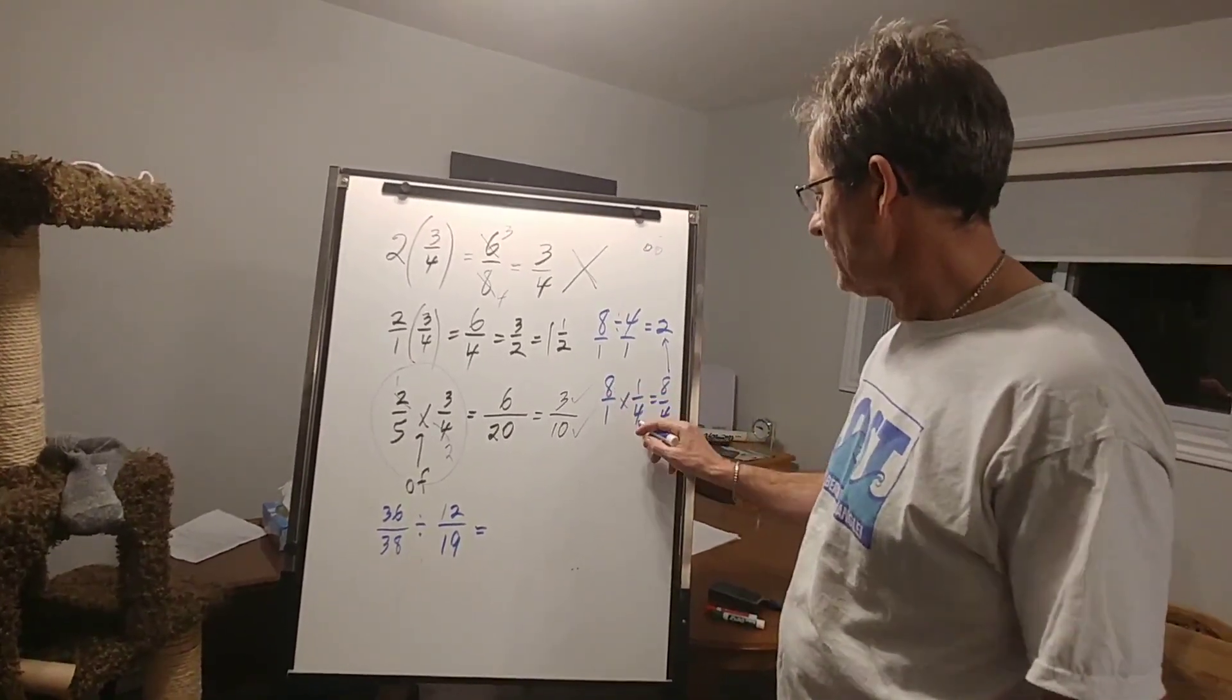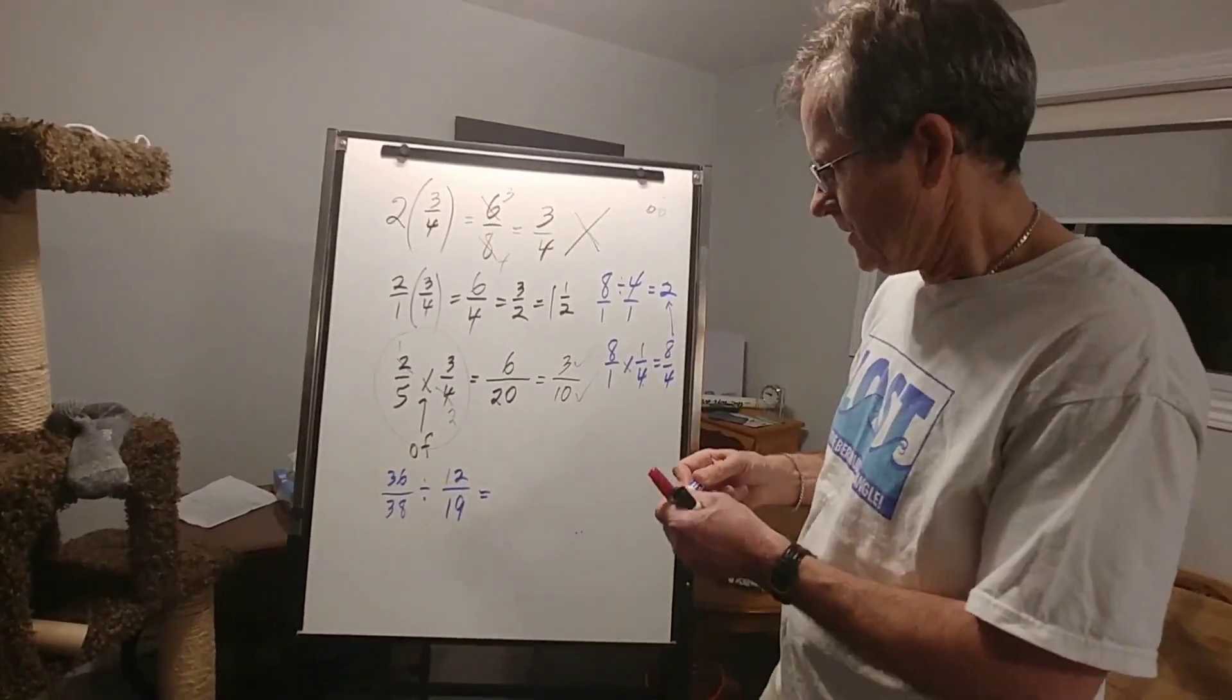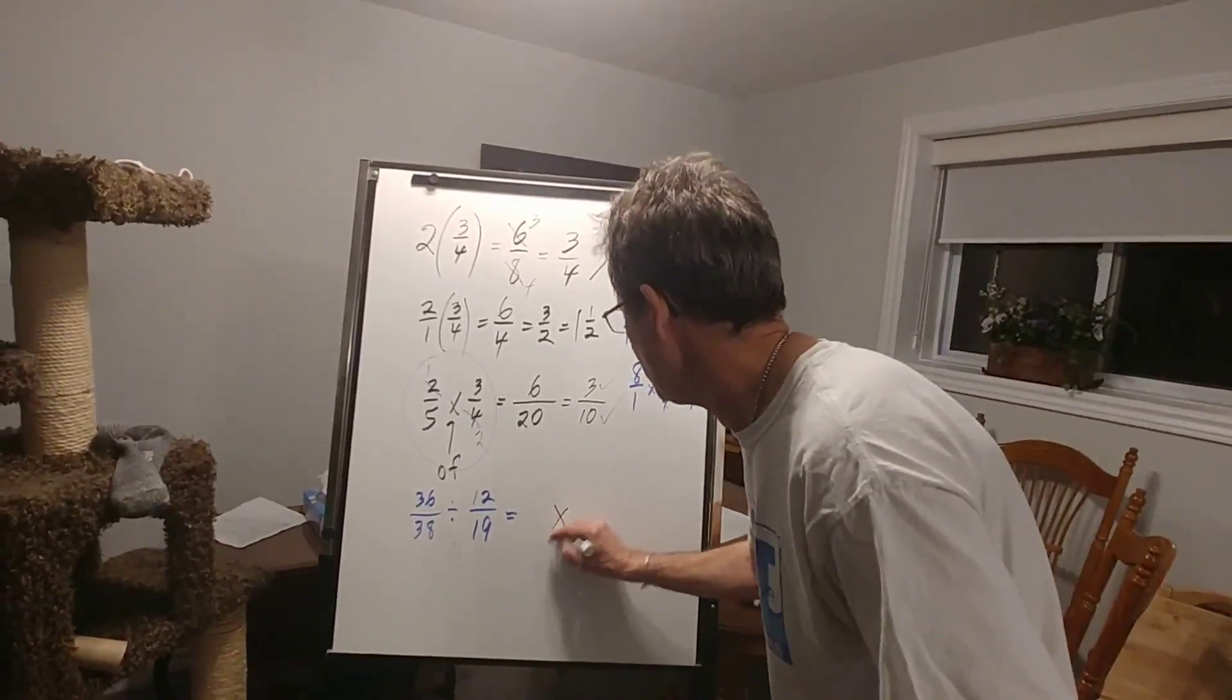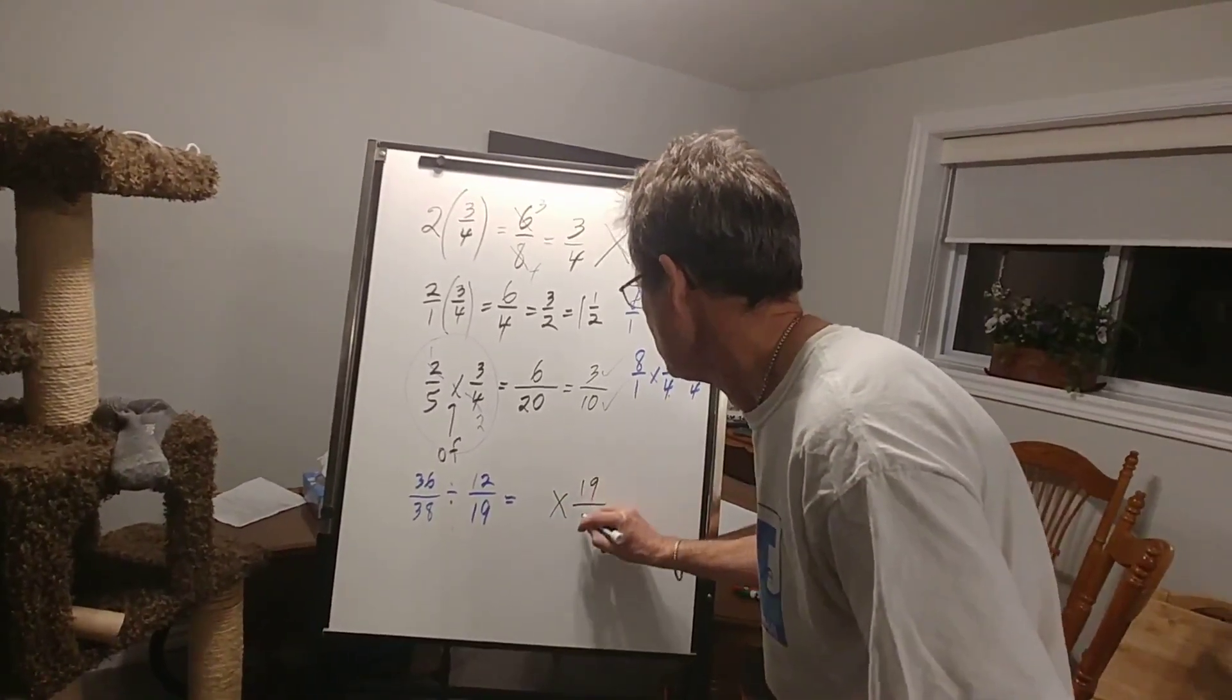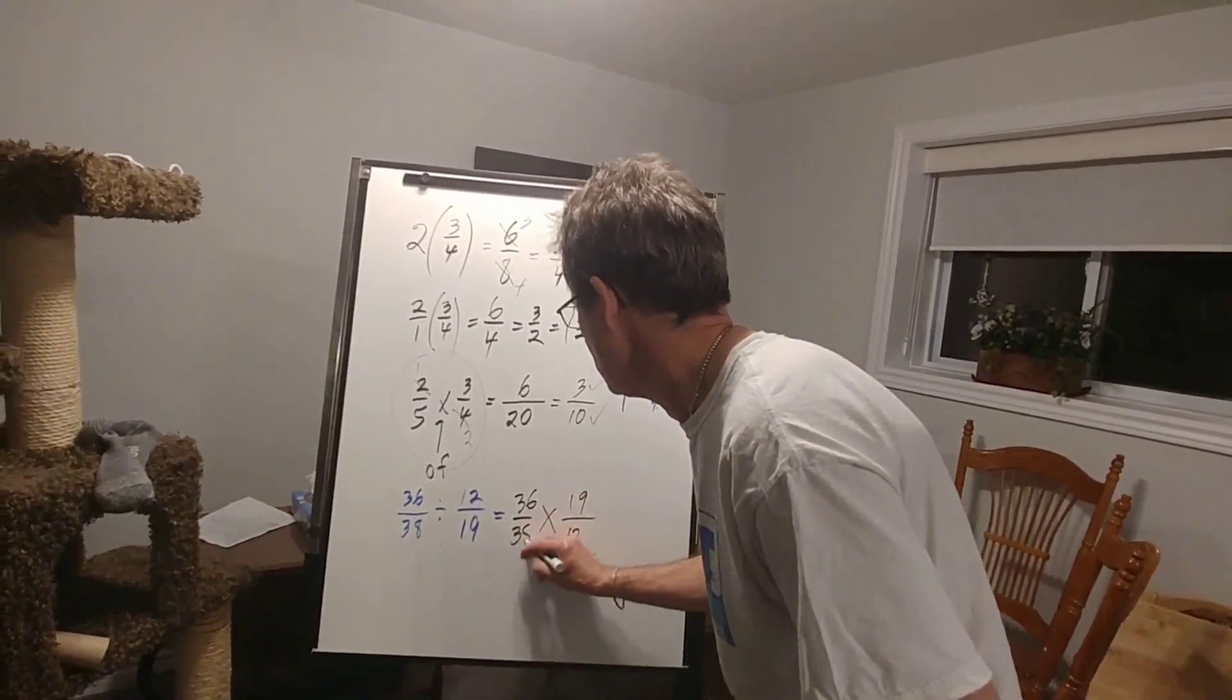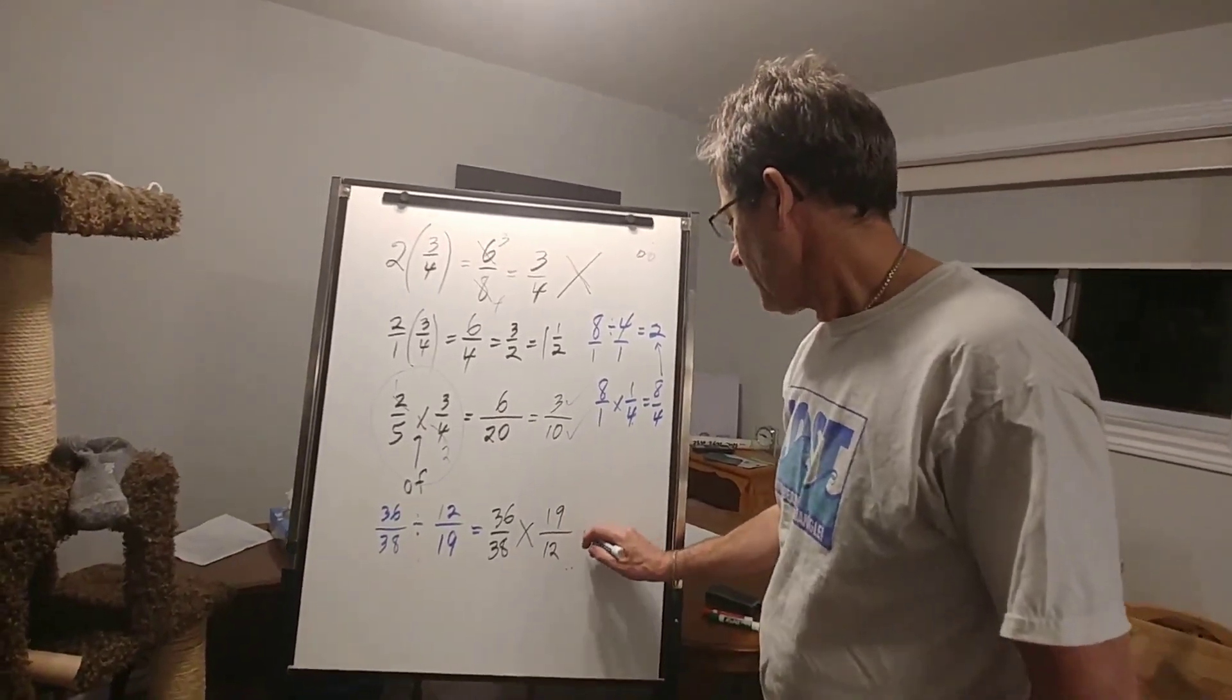Or I can cancel 4 into 8 twice, and I'll still get 2. So the point is, we can divide by instead multiplying by the reciprocal. So I would get 36 over 38 times 19 over 12.